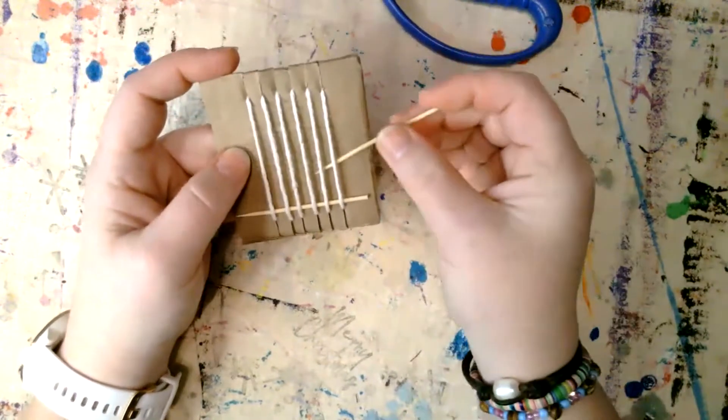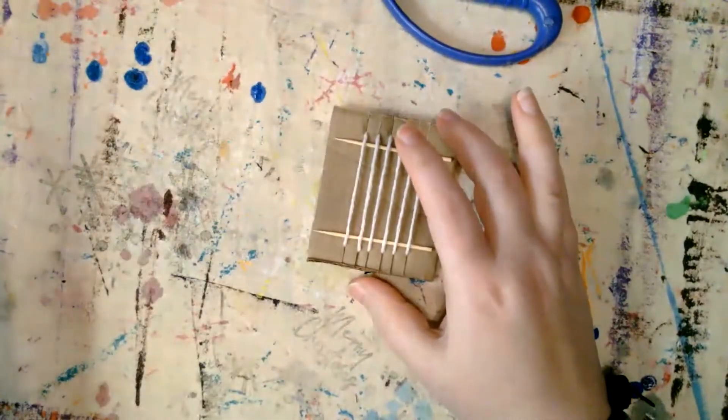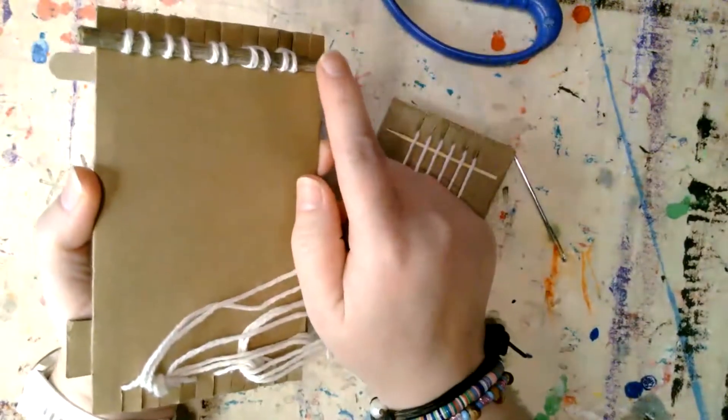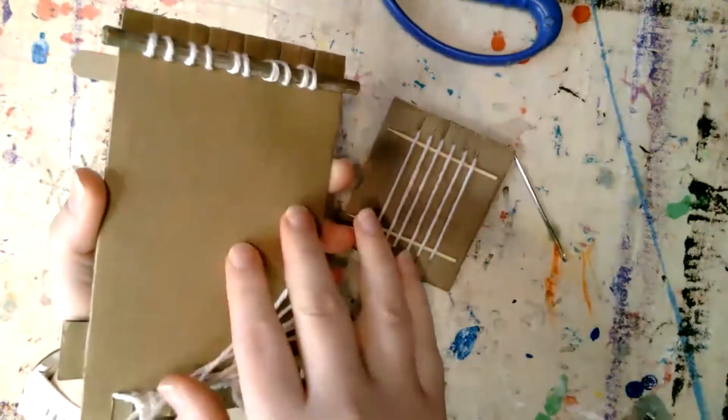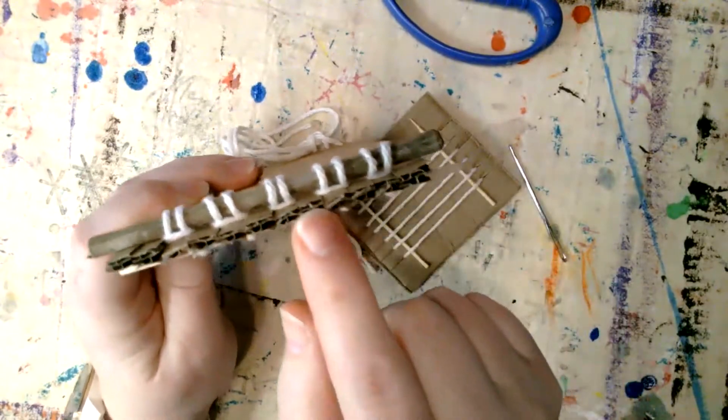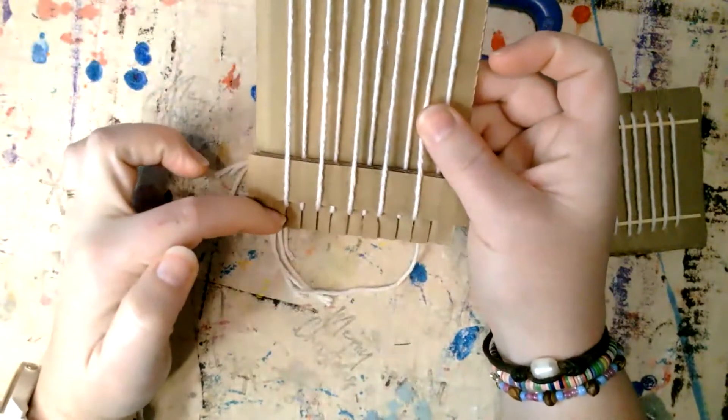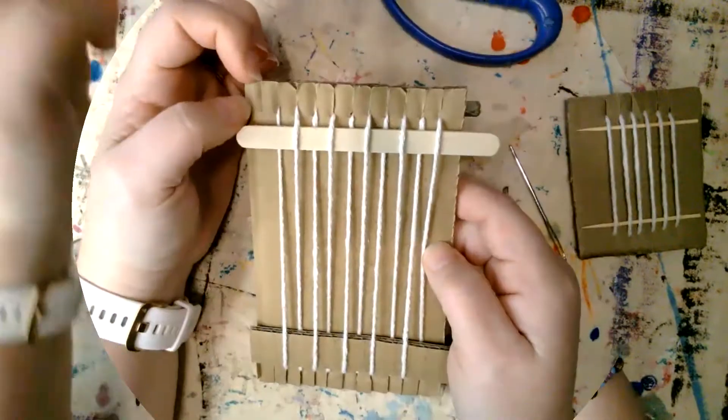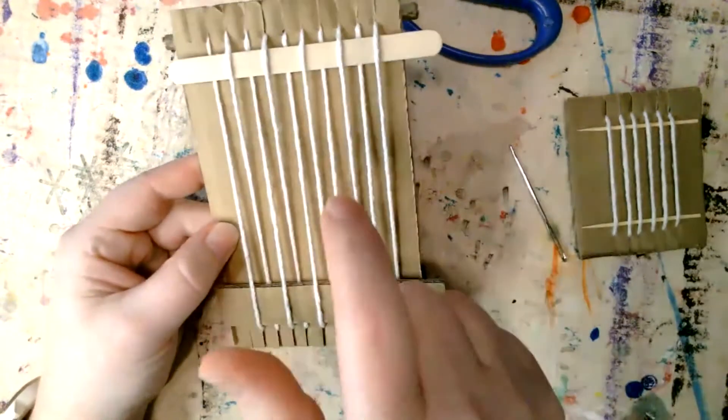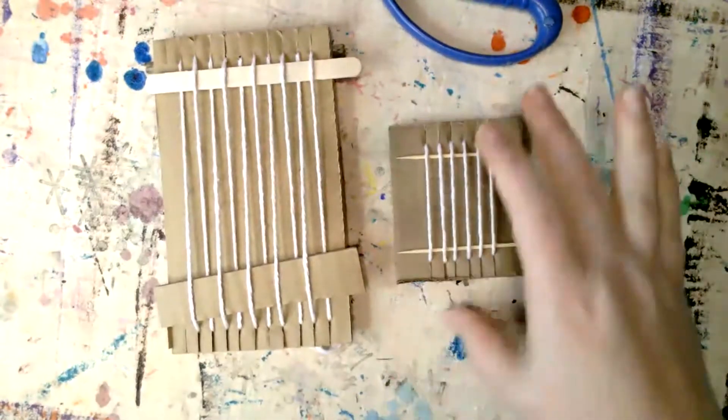This process is the same no matter what size loom you make. I've got this loom over here that's warped upside down for a wall hanging. It's already got a stick in there and I've used a different warping pattern, but if you'll notice the loom is the same. This is a double-layered cardboard, but I cut my slits parallel to the direction of the corrugation. I've got the same number of threads, same number of slits on the top and the bottom. I could warp this loom just like I did this one, same process. That is how you warp and make a tiny loom.